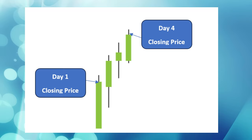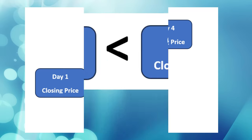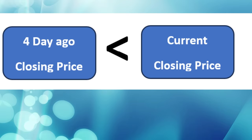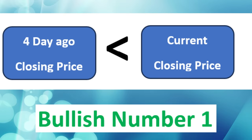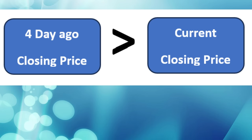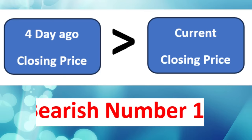This is how TD9 or DeMark 9 works: it compares the current candlestick's closing price to the closing price four days ago. If the current closing price is higher than four days ago, it is considered bullish and marked with a green number one. On the other hand, if the current closing price is lower than four days ago, it is considered bearish and marked with a red number one.